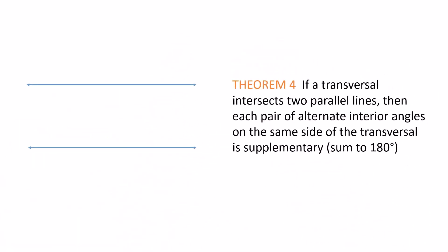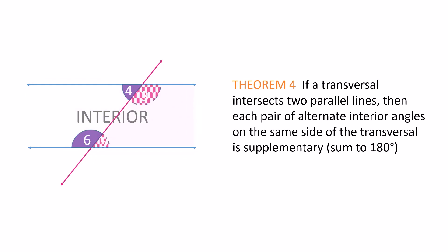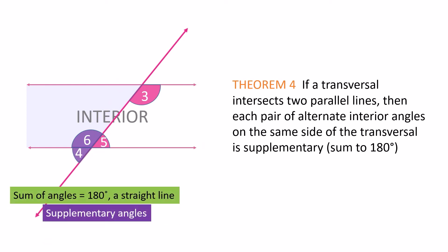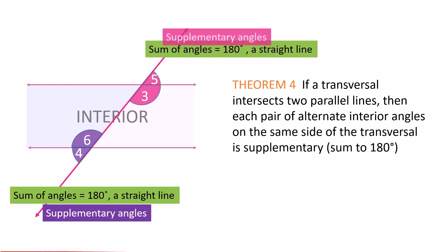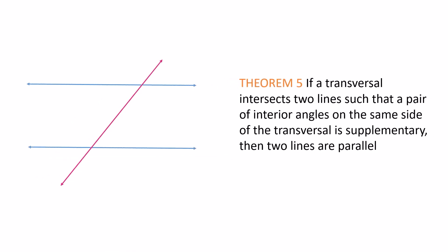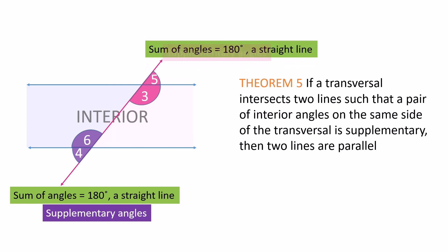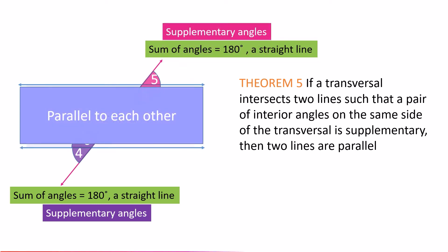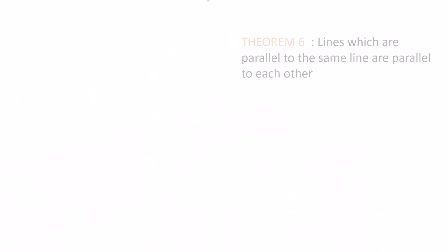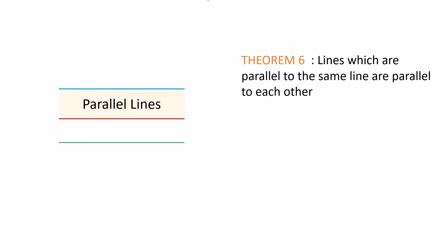Theorem 4: If a transversal intersects two parallel lines, then each pair of alternate interior angles on the same side of the transversal is supplementary. Theorem 5: If a transversal intersects two lines such that a pair of interior angles on the same side of the transversal is supplementary, then the two lines are parallel. Theorem 6: Lines which are parallel to the same line are parallel to each other.